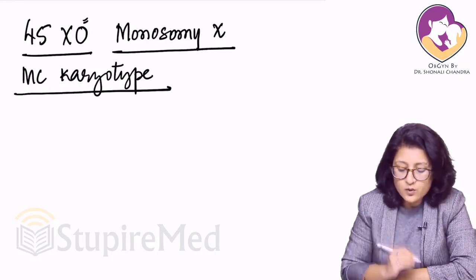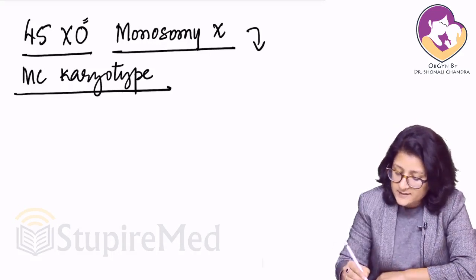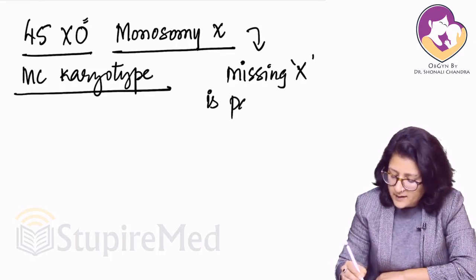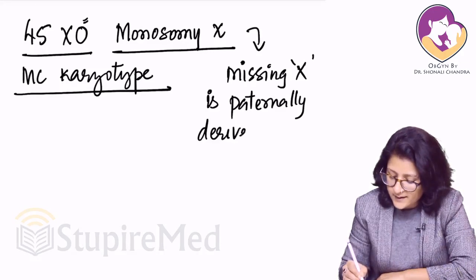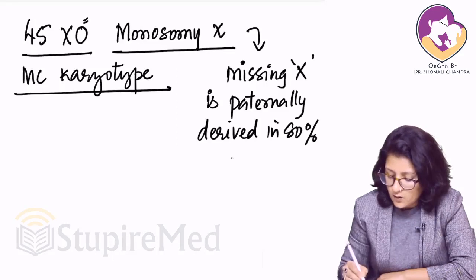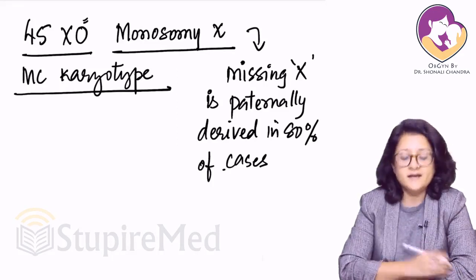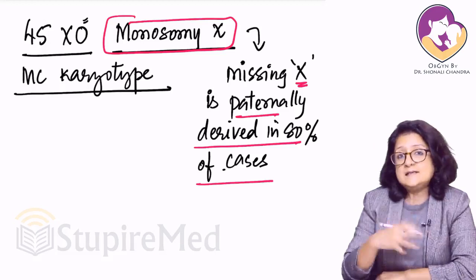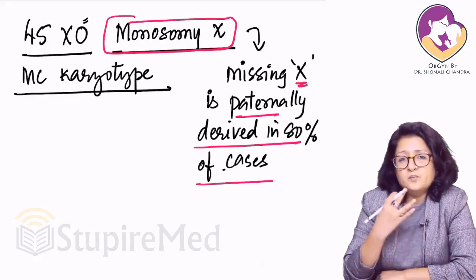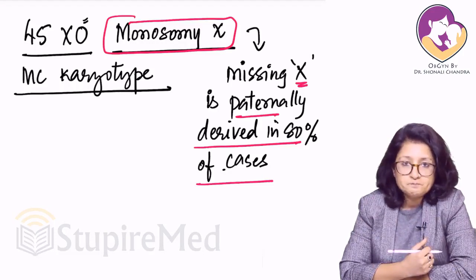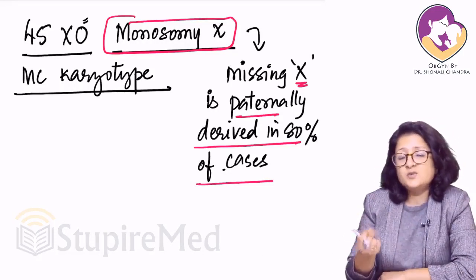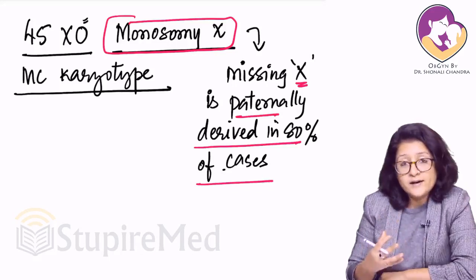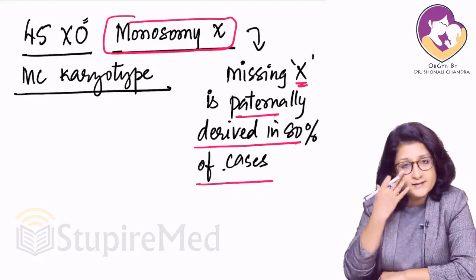Apart from monosomy X, the missing X is paternally derived in 80% of cases. So in 80% of cases of monosomy X, the X that is missing is paternally derived. Turner syndrome is an aneuploidy — aneuploidy meaning an extra or missing single chromosome. So monosomy X is an aneuploidy.